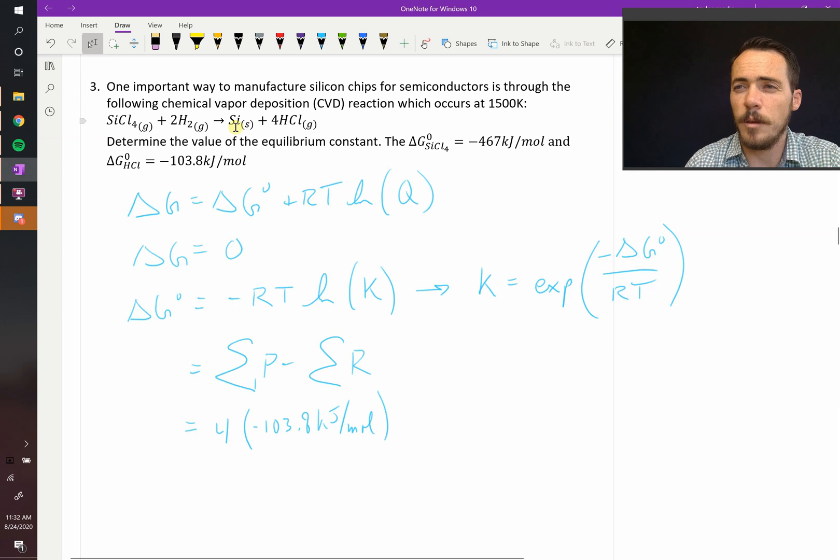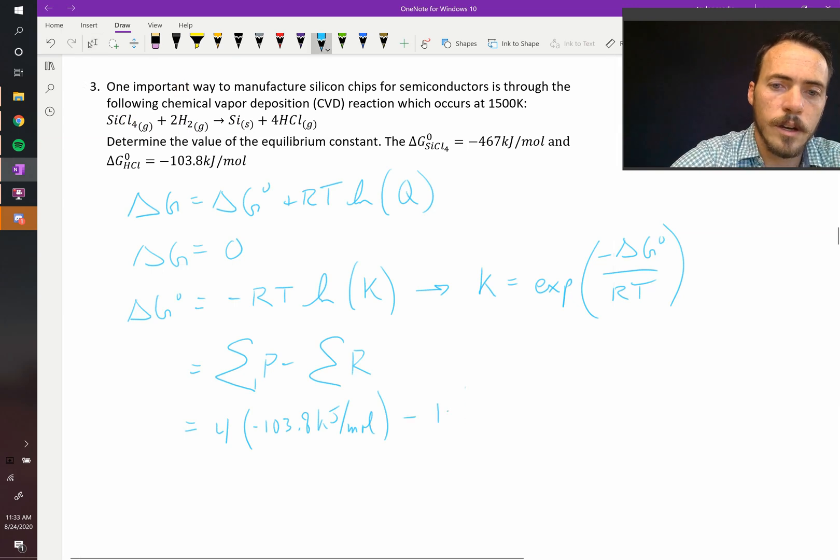Plus silicon, since that's an element, we're just going to call it zero. Over here, hydrogen is just a zero on our reactants, but silicon tetrachloride is not. It's going to be minus one times negative 467 kilojoules per mole.